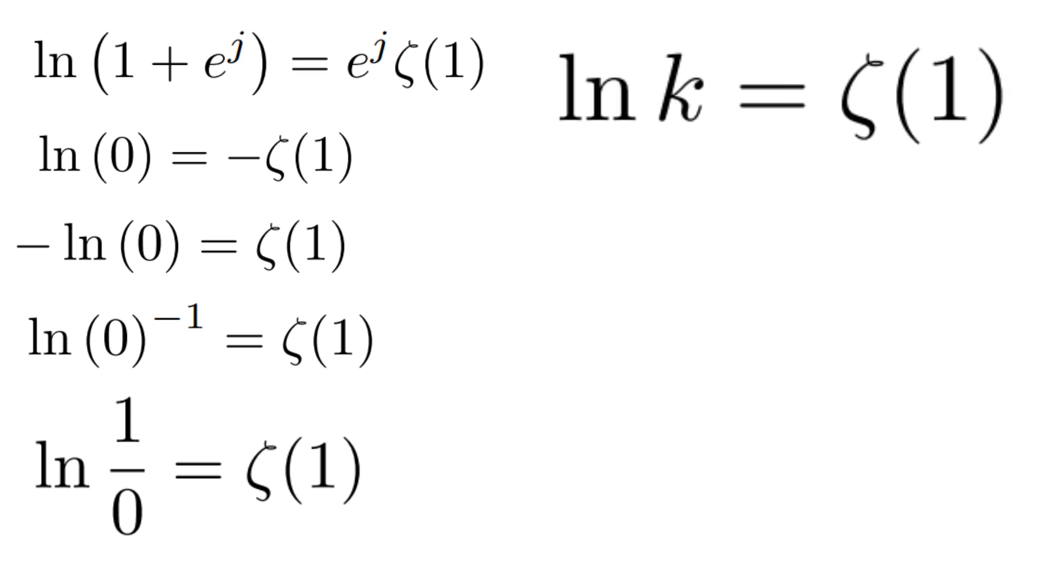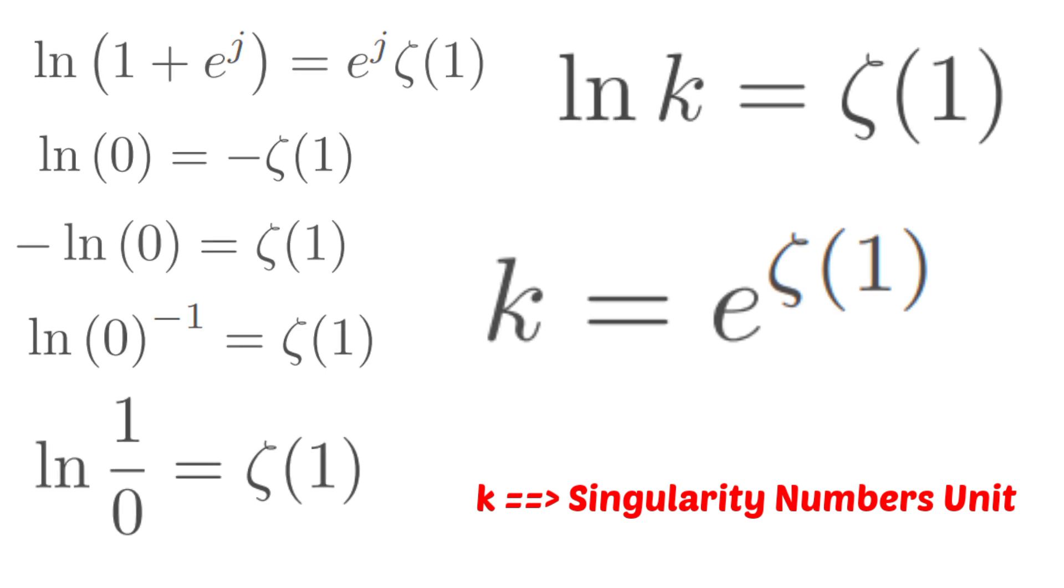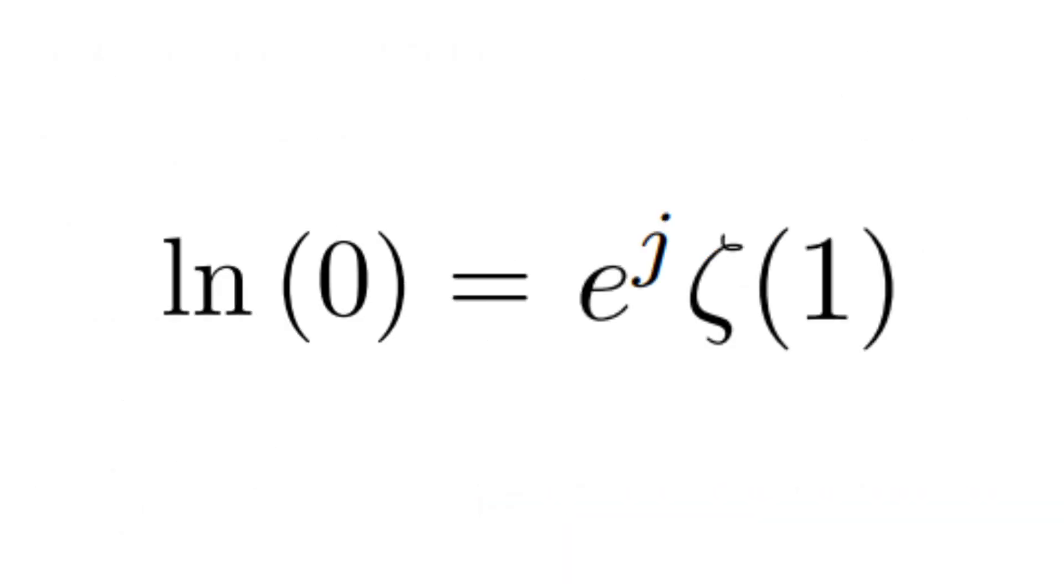Finally, we can express this as the logarithm of k equals zeta of 1, where k is equal to e raised to the power of zeta of 1. Here's the final insight: k represents a special number known as the singularity number unit. This number plays a fundamental role in understanding certain extreme behaviors of mathematical functions, such as when the logarithm approaches 0 or infinity. And there you have it. We've successfully found the natural log of 0 using the concept of the virtual unit j and the Riemann zeta function. This result challenges our traditional understanding of logarithms and opens up exciting new possibilities for thinking about mathematical functions.